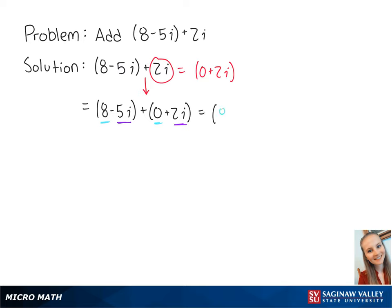This becomes 8 plus 0 plus negative 5i plus 2i, which simplifies to 8 minus 3i. This is the final answer.